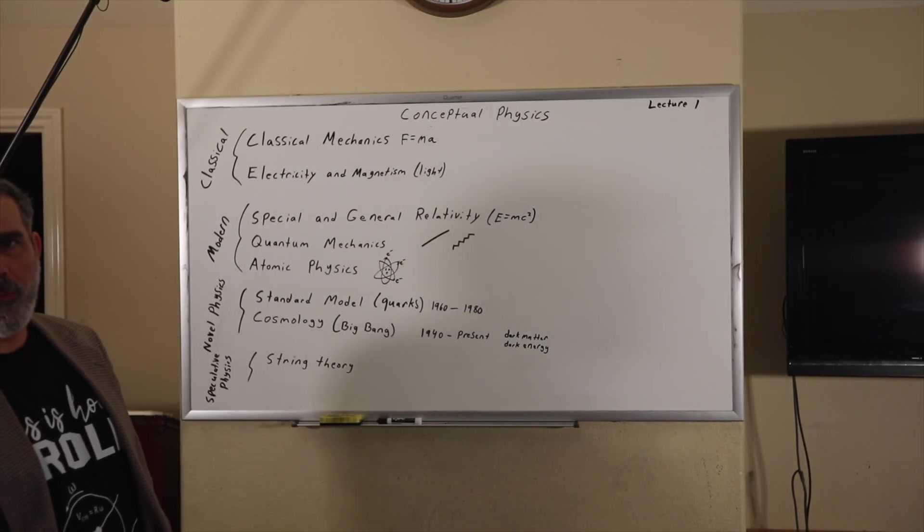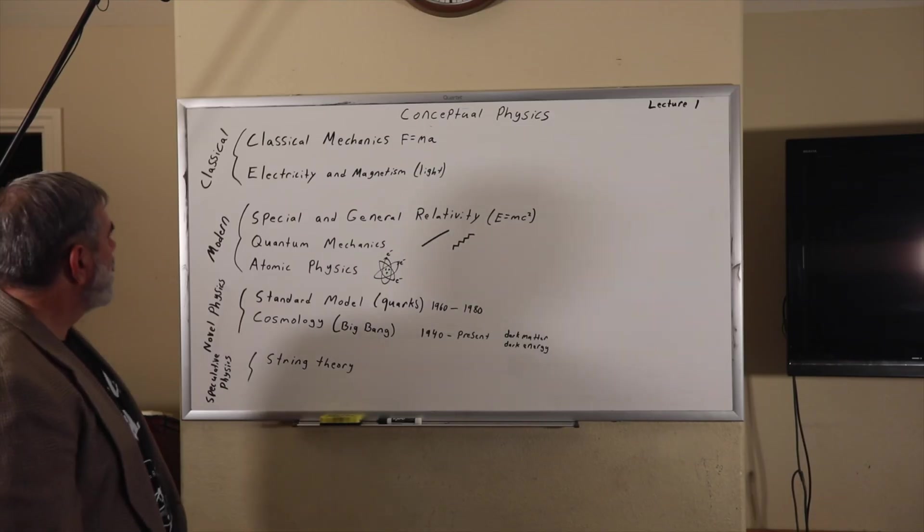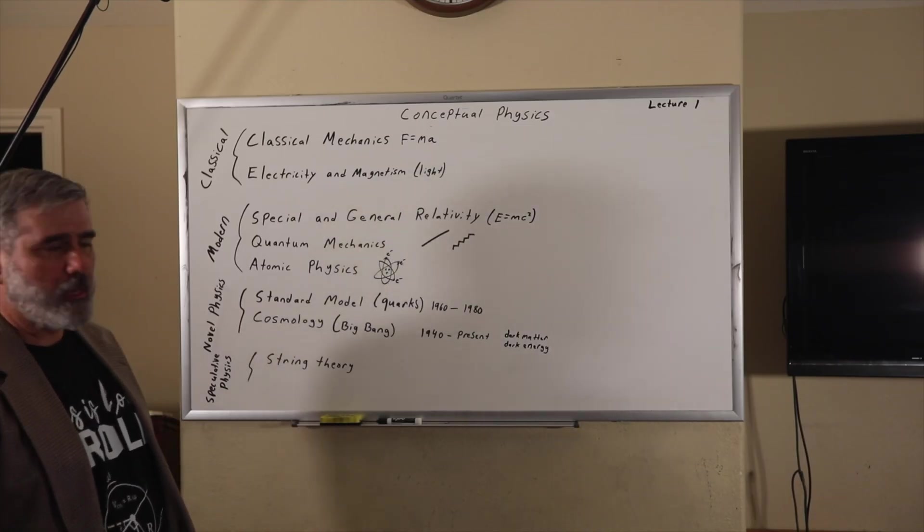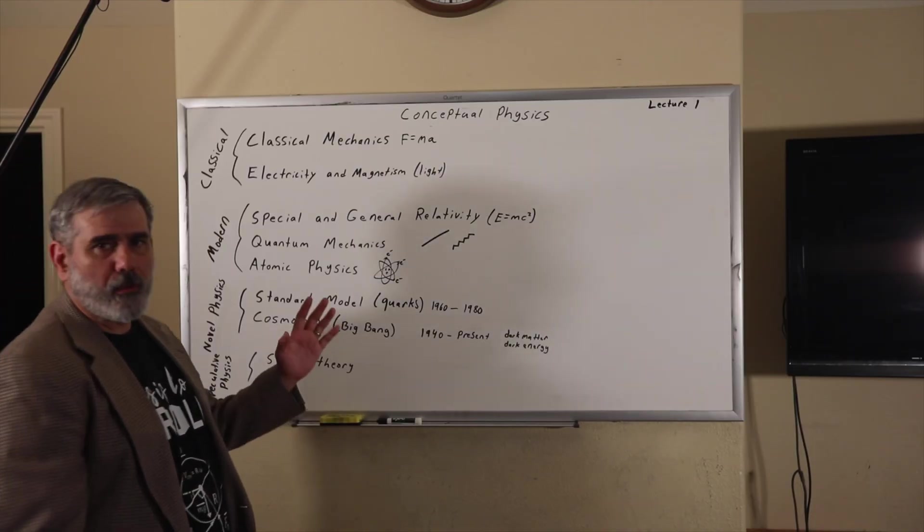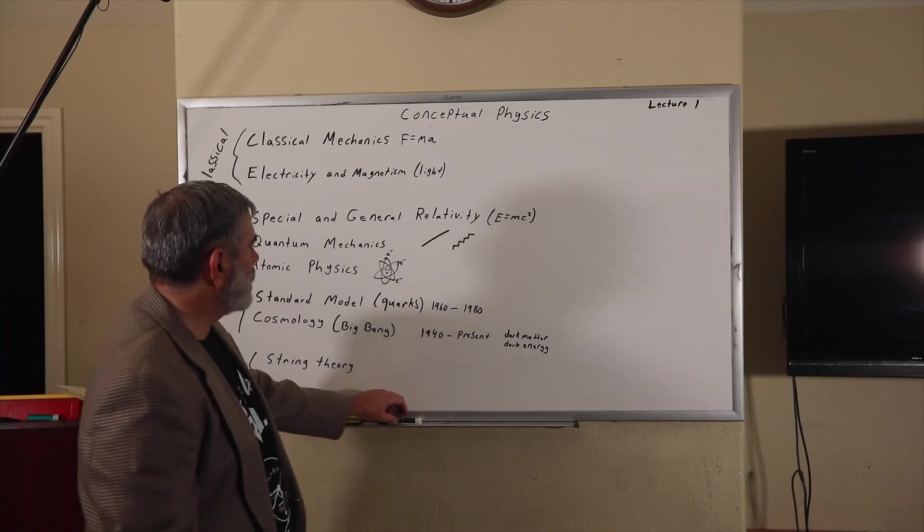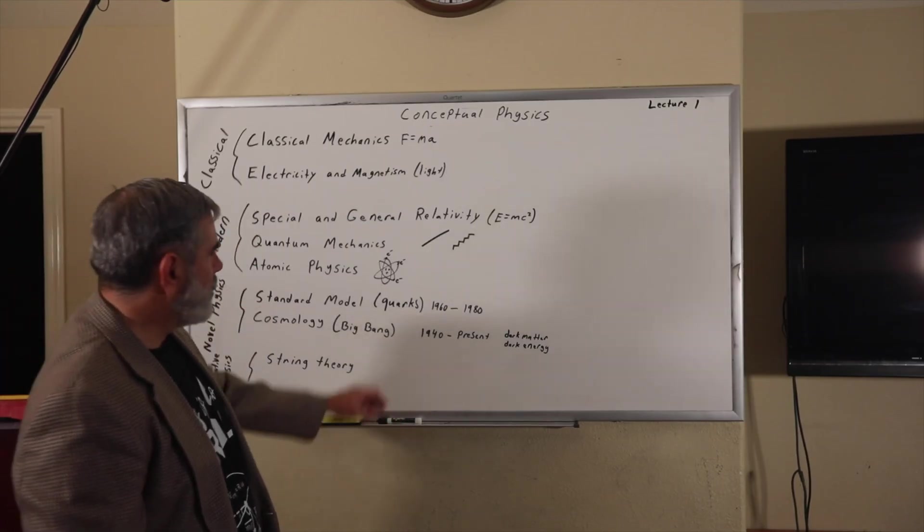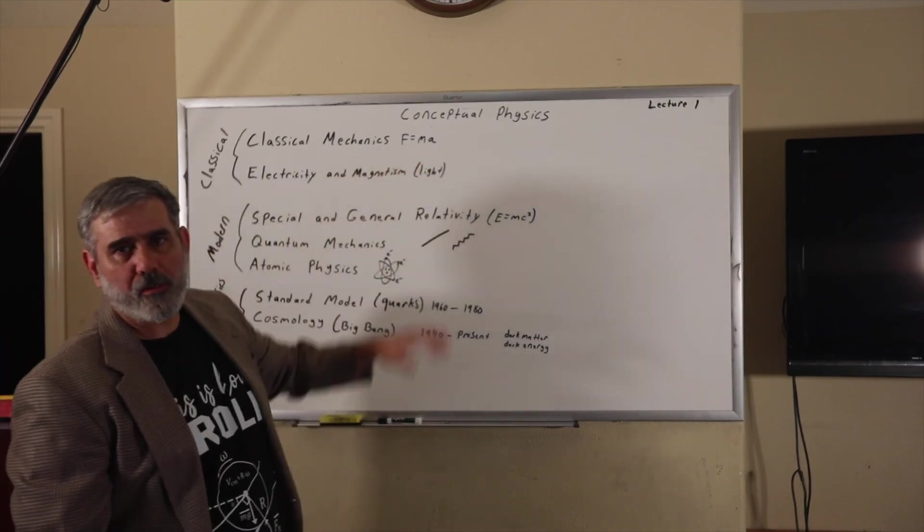Physics as we know it really started with Isaac Newton. His publication of the Principia in 1687 developed what we now refer to as classical mechanics in a slightly different form but essentially the same. And you might have heard F equals ma, right? This is his famous equation.